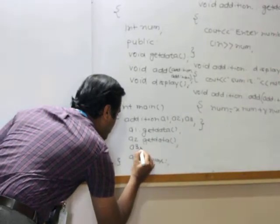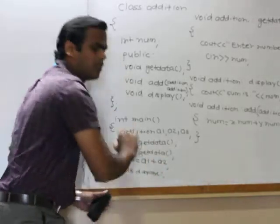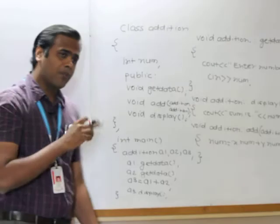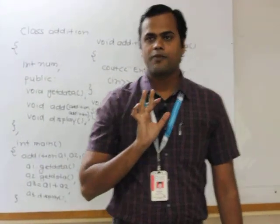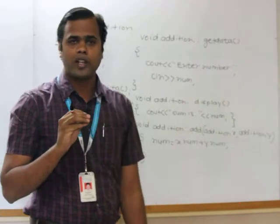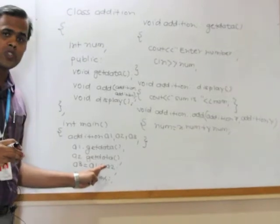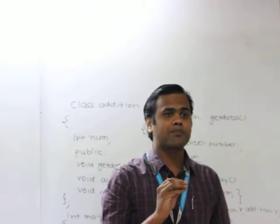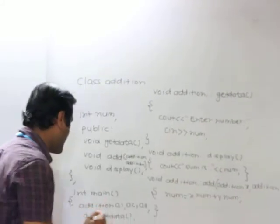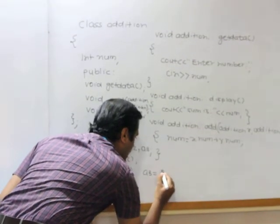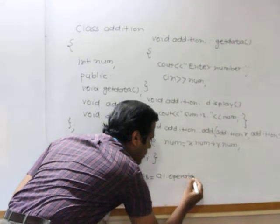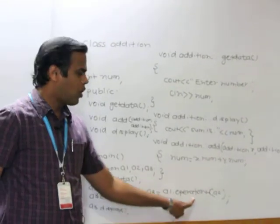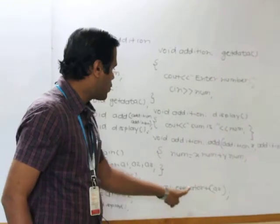This is binary operator overloading because there are two operands a1 and a2, and the operator we are going to overload is the plus operator. The rule of operator overloading is: the left-side operand is always responsible for calling the function. So a1 object is responsible for calling the function and a2 is passed explicitly. We can write: a3 = a1.operator+(a2) — 'operator' is a keyword and plus is the operator being overloaded.